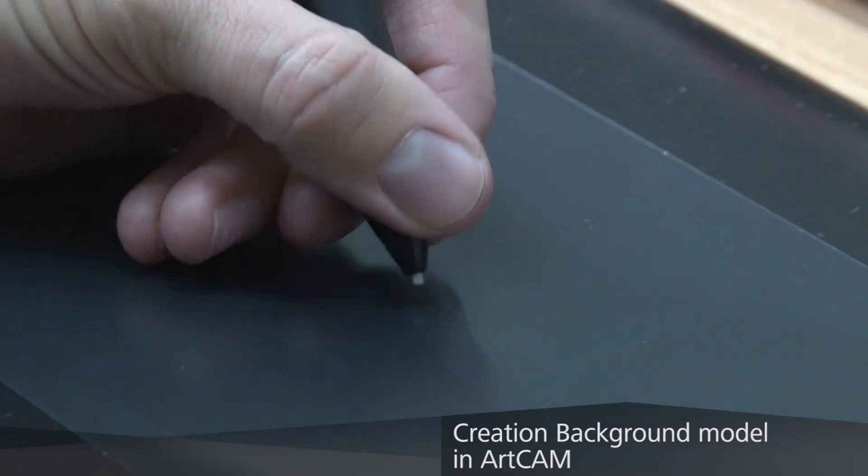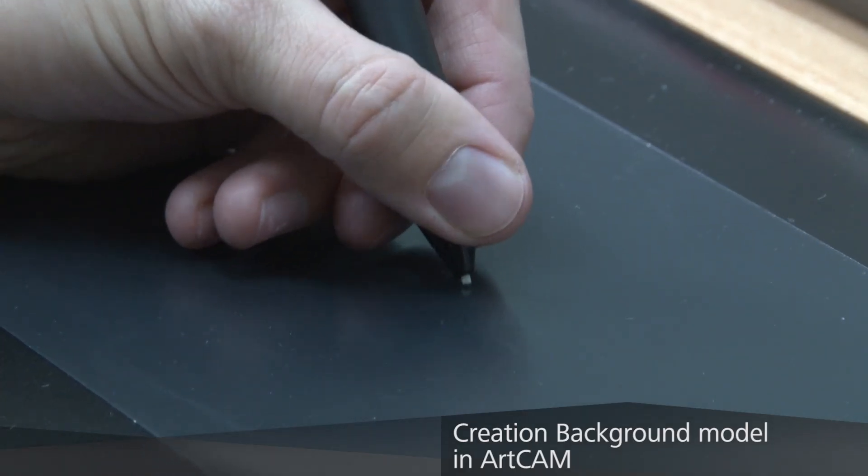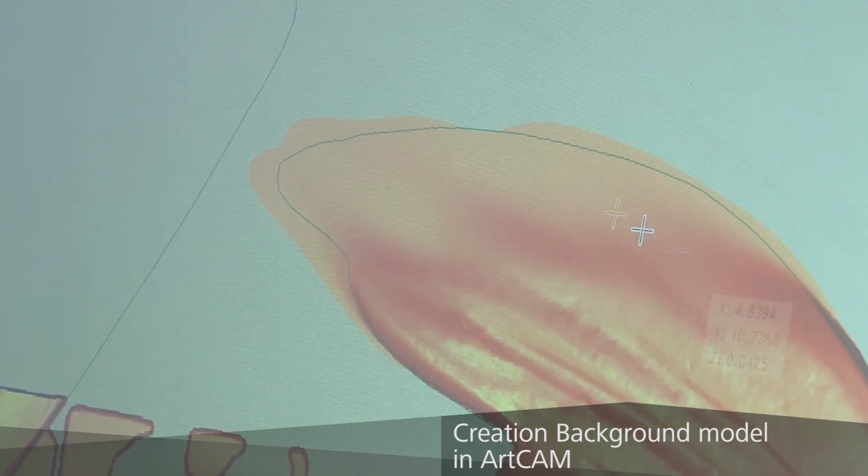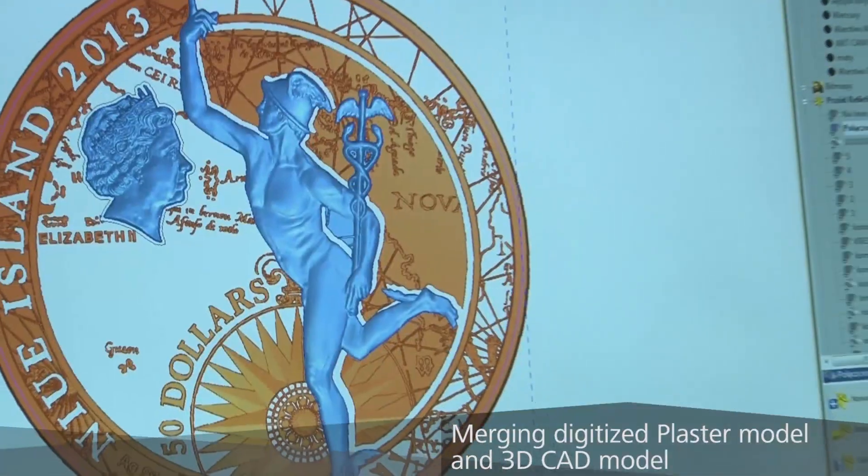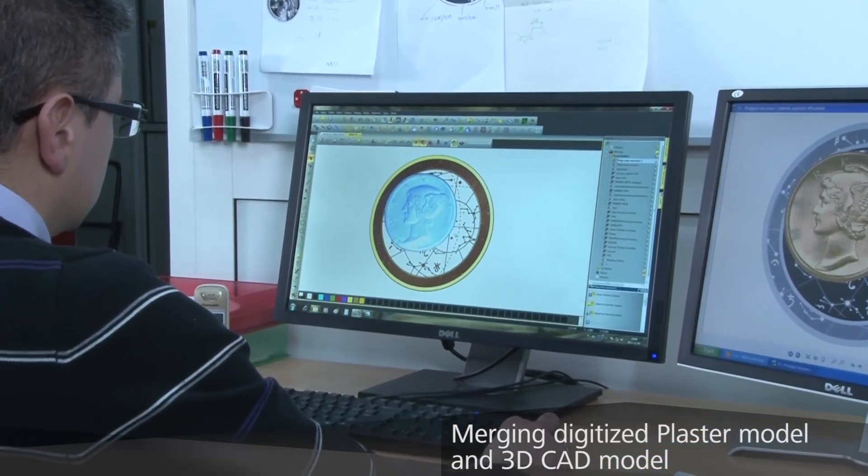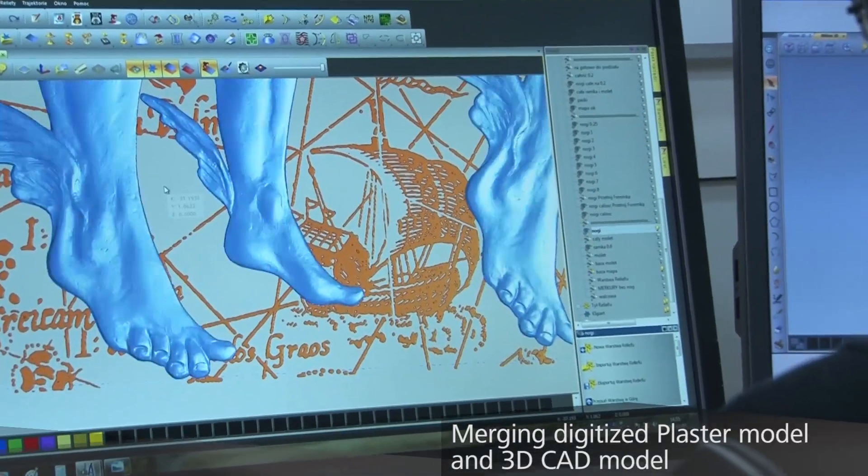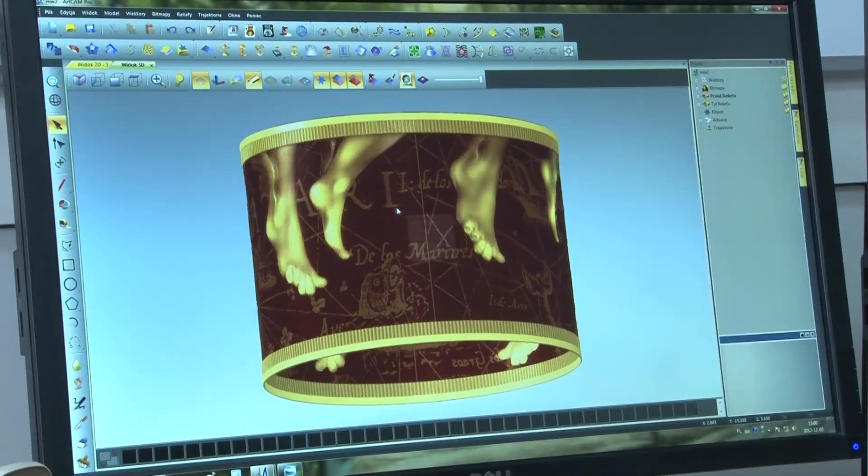For the background, an artist created a 3D CAD model from 2D sketches. Then, the digitized plaster model and the CAD created background are merged to a highly intricate 3D model of the coin using the software.